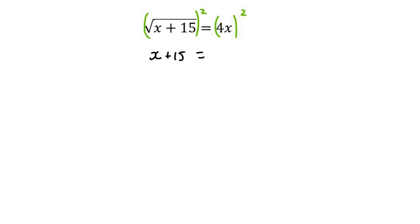4x squared is actually 16x². I'm then going to take everything to the right. I would then use the quadratic formula and we'll find that x is 1 or x equals negative 0.94.